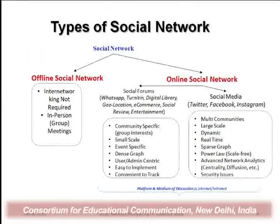Regarding online social networks, there are two basic types. The first is social forums — those normally used for close group conversations like WhatsApp or Turnitin, which is used among teachers and students for checking plagiarism. It could also be a digital library with geolocation information or e-commerce portals specific to a particular company. They are very dense graphs but designed on a small scale, making them easy to implement and convenient to track.